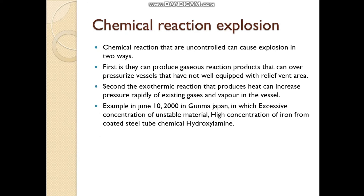Chemical reaction explosion: when a chemical reaction is uncontrolled, it causes a chemical reaction explosion. There are two types. First, when gaseous reaction products are produced, they can cause overpressure in a vessel that is not well equipped with a relief vent — if there is no adequate relief vent, a chemical reaction explosion can result. Second, when an exothermic reaction produces heat and rapidly increases the pressure of existing gases and vapours in that area, a chemical reaction explosion can also occur.